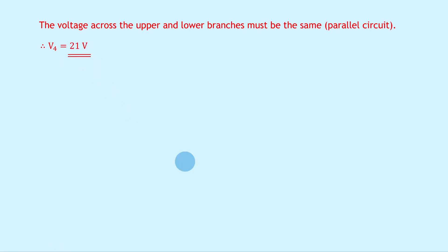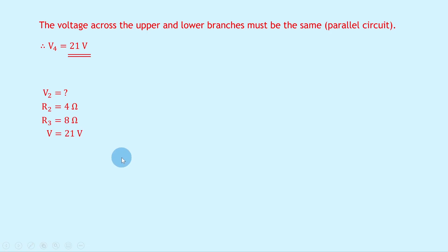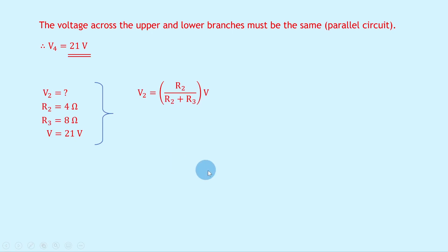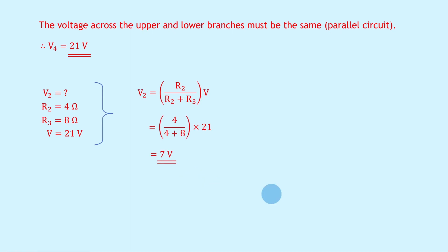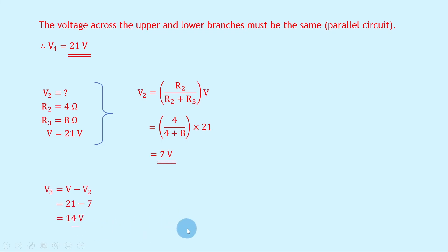To find V2, using the potential divider equation for the top branch: V2 equals R2 over R2 plus R3 times V, so 4 over 4 plus 8 times 21 gives 7 volts. Since the total branch voltage is 21 volts, V3 equals V minus V2, so 21 minus 7 gives 14 volts.